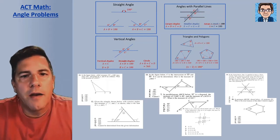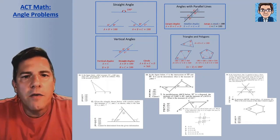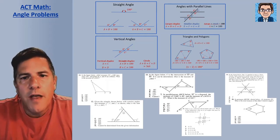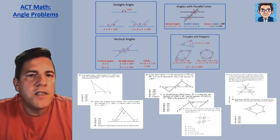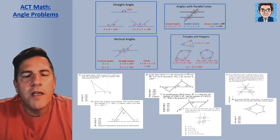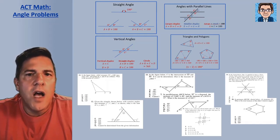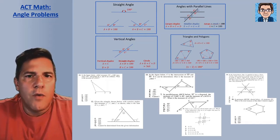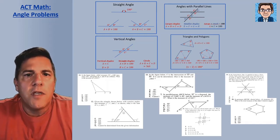In this video we're going to take a look at ACT math problems that involve angles. We're going to cover some basics first: straight angles, vertical angles, angles formed when a line crosses parallel lines, and angles in triangles and polygons. Then there are seven sample ACT problems that all have to do with angle basics. This video is not going to get into trigonometry — I'm going to make another video to cover that.